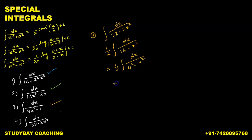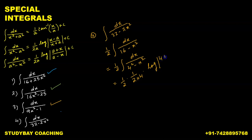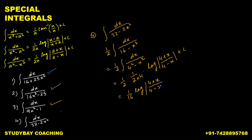Applying the formula 1 upon 2a times log of (a plus x) upon (a minus x), where a equals 4: this becomes 1 upon 2 times 1 upon (2 times 4) times log of (4 plus x) upon (4 minus x), plus c. Simplifying, 1/2 times 1/8 gives 1 upon 16. So the final answer is 1 upon 16 times log of (4 plus x) upon (4 minus x), plus c.